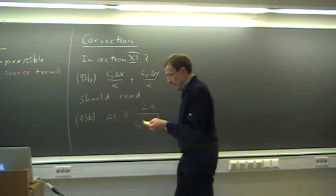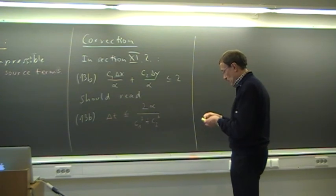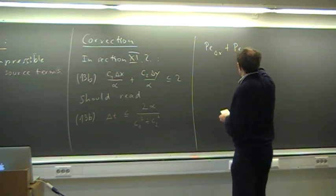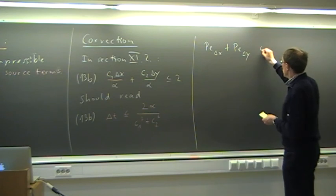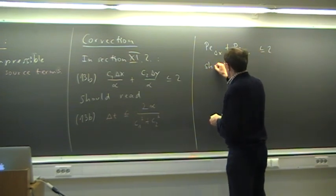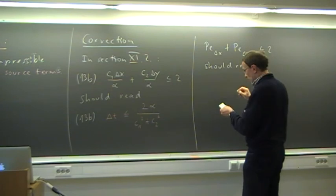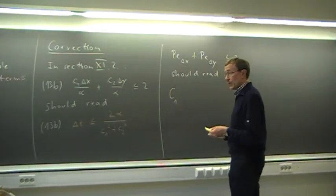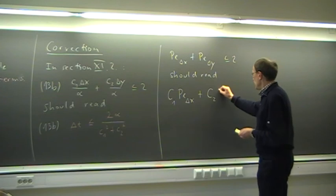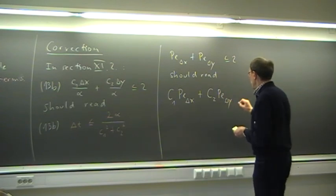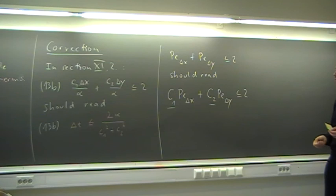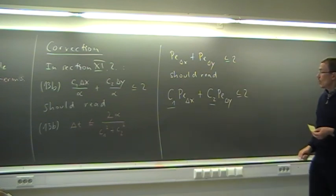When we determine the time step, we take condition 13a for the 2D diffusion equation and this condition, and we take the minimum. When we express this as the cell-Péclet number in x and y-direction — the sum of those — less than or equal to 2, that is corresponding to: the Courant number C1 times the Péclet number, plus the Courant number in y-direction times the cell-Péclet number in y-direction. That condition is more restricted than this one.